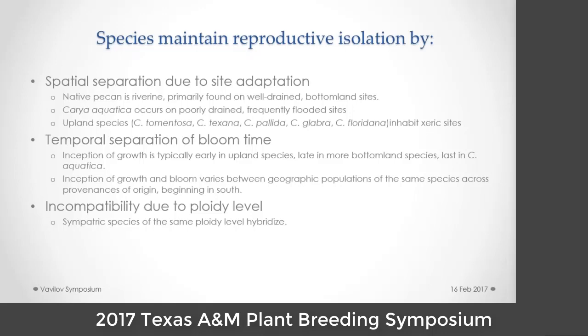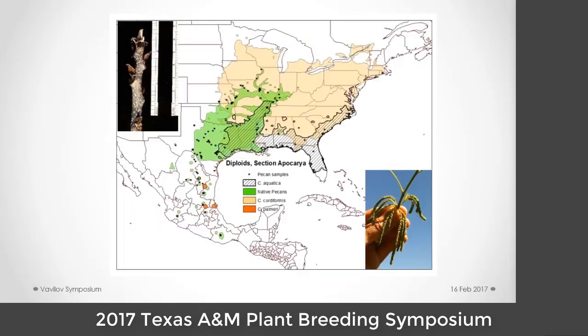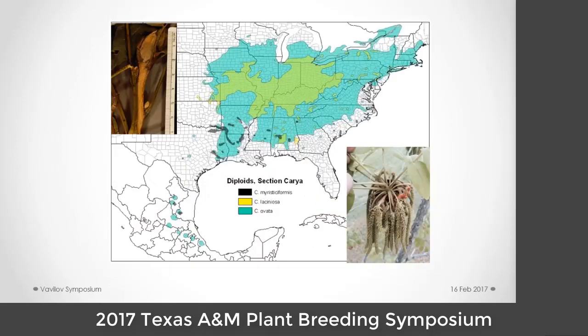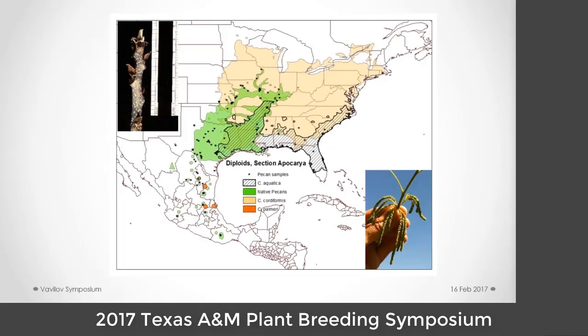Sympatric species on the same ploidy level tend to hybridize. Looking at the diploids in section Apocaria, the pecan hickories, these species are distributed across the southeastern United States and overlap in many areas. They have a disjunct distribution down into Mexico as far south as Oaxaca. Carya palmeri is endemic to Mexico and only occurs in disjunct populations there. The botanical and morphological characteristics we look for in section Apocaria are valvate bud scales, associated with catkins formed in opposite pairs at the base of the current season's growth.